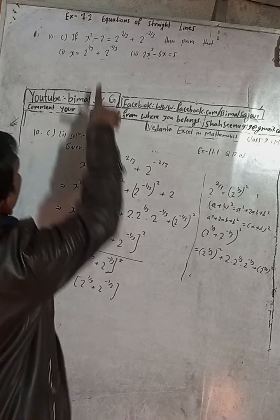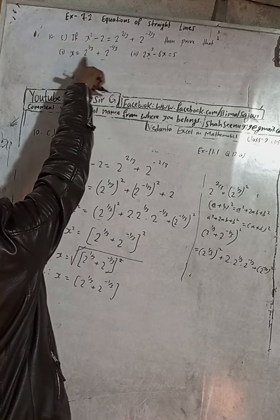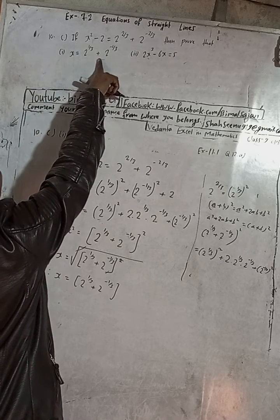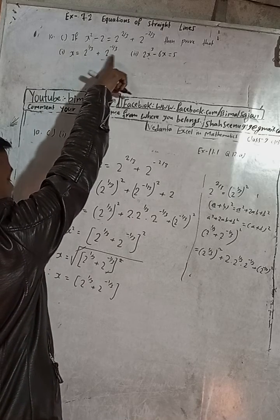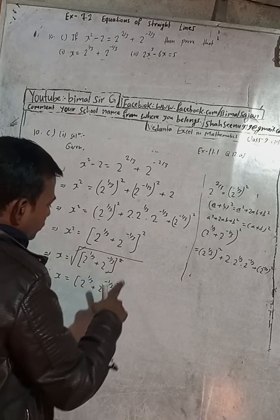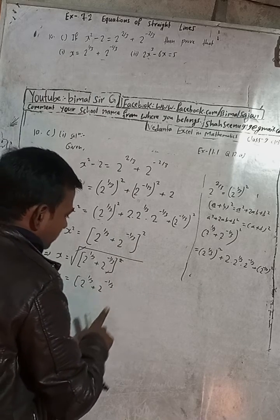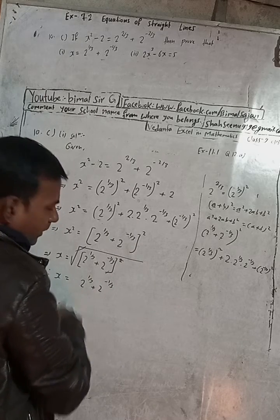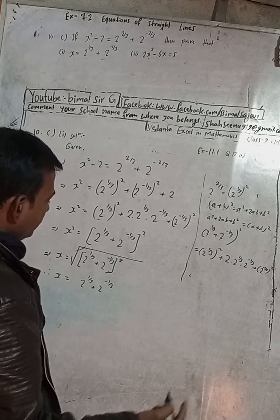This is what we had to prove: x is equal to 2 to the power 1 by 3 plus 2 to the power minus 1 by 3. It is your choice whether you give the bracket or not.